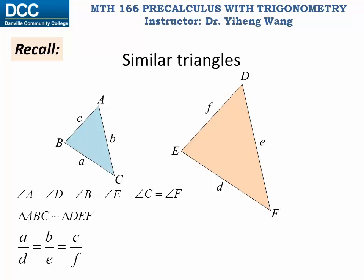Also, the ratio of any two sides in the first triangle must equal the ratio of the two corresponding sides in the second triangle. For example, the ratio between a and b — both sides within the first triangle — must equal the ratio between d and e, the two corresponding sides in the second triangle. The ratio between c and a must equal the ratio between f and d, etc.